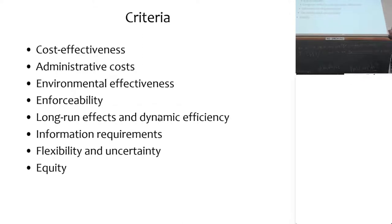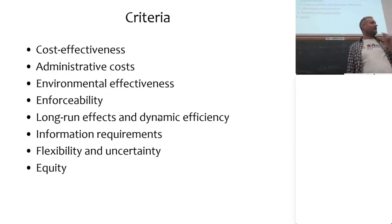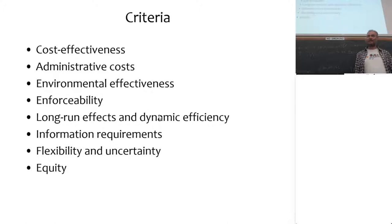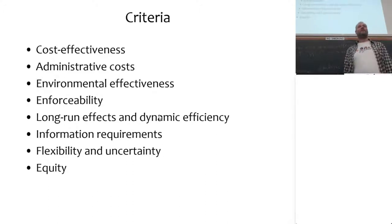Different interventions can be judged on a range of criteria. How expensive are they, in terms of the cost you impose on society? There are also administrative costs — some things can be implemented very cheaply, some require a lot of civil servants. There is environmental effectiveness: we are regulating to clean up the environment, so we'd better actually clean it up. Some policy interventions do well on that, and some do not. A beautiful plan on paper that doesn't work in practice doesn't work.